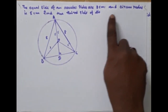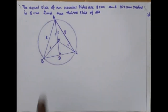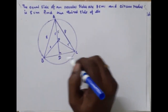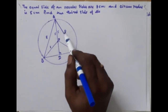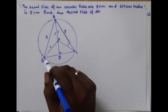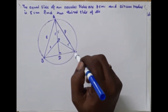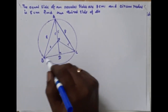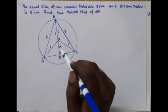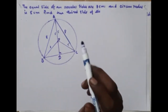The equal sides of an isosceles triangle are 8 centimeters and the circumradius of the triangle is 5 centimeters — find the length of the third side. This is the third side of an isosceles triangle. To determine the axis of the isosceles triangle: the height of the isosceles triangle is 8 centimeters. We have two right-angle triangles between BDA and CDA.